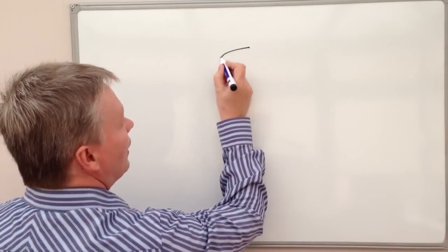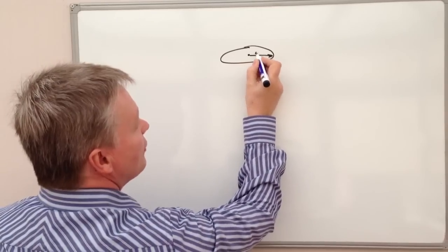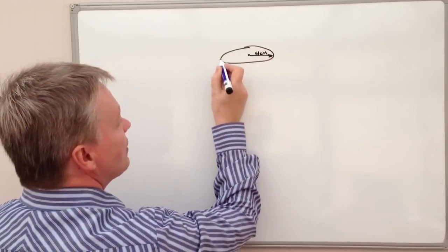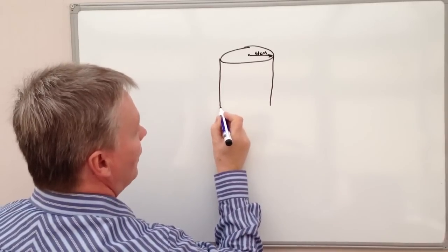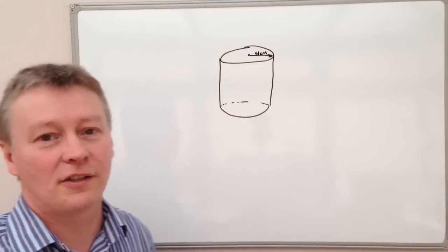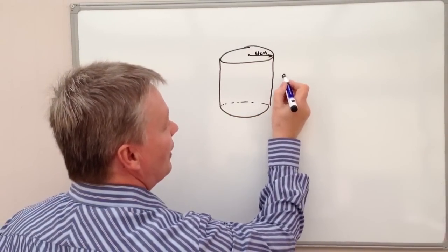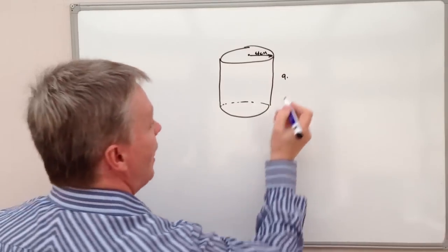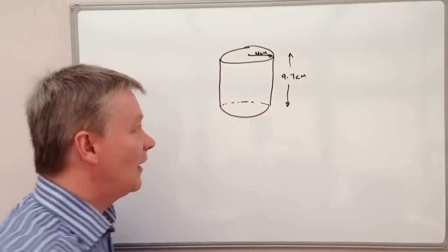Just by way of the question, it's a cylinder with a radius of 4 centimetres and it's got a height of, I've not drawn this particularly well, it's not exactly to scale but it's close enough. It's going to be a height of 9.7 centimetres.